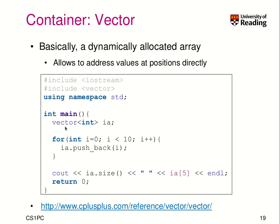We use the namespace std because vector is in the standard. Now let's create a vector of integers. As it is a template, we have to specify the type. This vector is called ia. In a for loop, I use the method push_back to add element i at the end of the vector. Then I find out the size of the vector, which is a typical method for containers, and I access element number 6 directly.